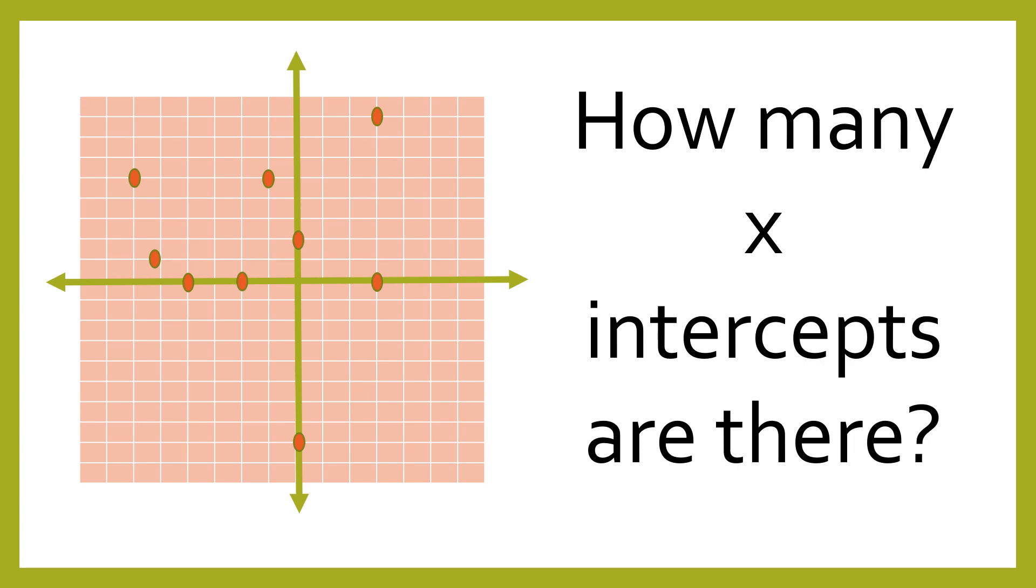How many x-intercepts are there? So in this given example, there are 3 x-intercepts. Remember, the x-intercept is on the x-axis. So we have 1, 2, and then 3.